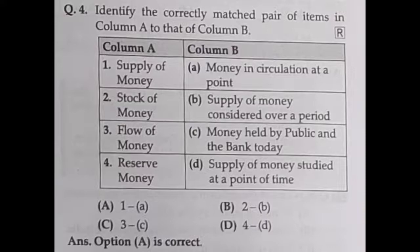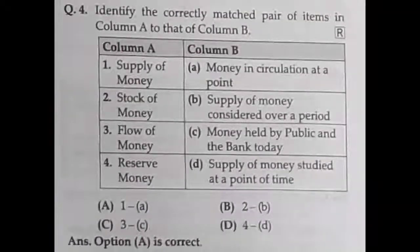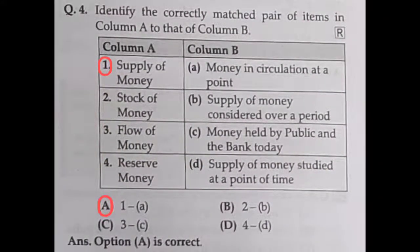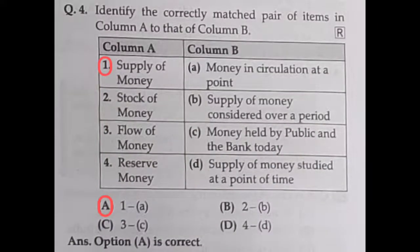Question number four: identify the correctly matched pair of items in column A to column B. The supply of money is actually the money in circulation at a point of time — that is the supply of money. So the first option is correct. Answer option A1A — that is option A — is the correct answer.